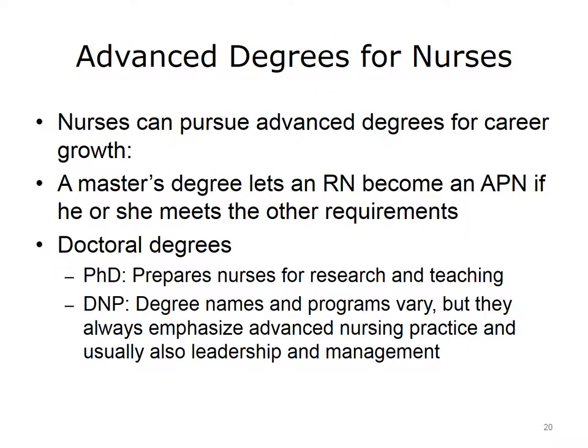Like specialty certificates, higher education can help nurses advance. RNs can earn a master's degree in nursing to become an advanced practice nurse. They can also earn doctoral degrees in nursing — either a Doctor of Philosophy, or PhD, or a Doctor of Nursing Practice, or DNP. The PhD program trains a nurse to do research and teaching, and the DNP program trains a nurse in leadership and other skills. Today, many nurses may seek advanced degrees in disciplines such as informatics or business, which support other roles nurses hold in today's industry.